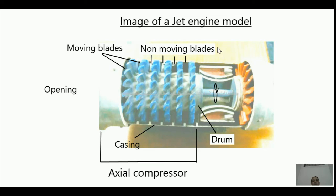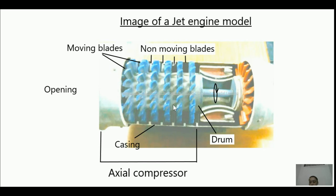So what is the job of the non-moving blades? High kinetic energy air reaches these non-moving blades, and over there the actual rise of pressure takes place. They also give the proper direction to the air before it reaches the second set of moving blades.